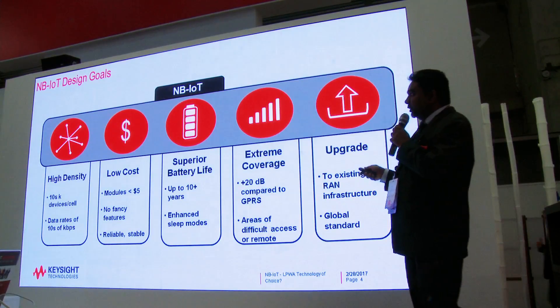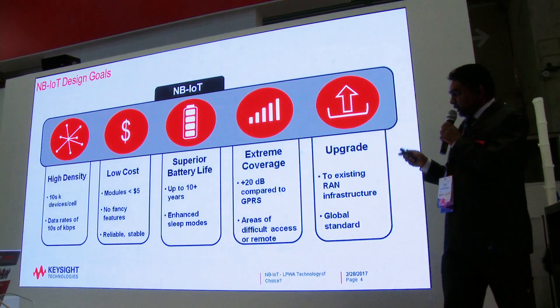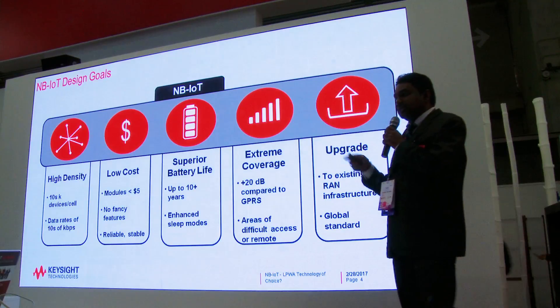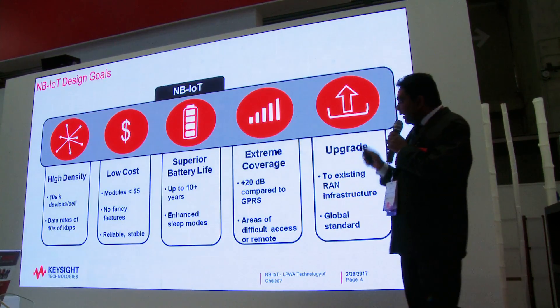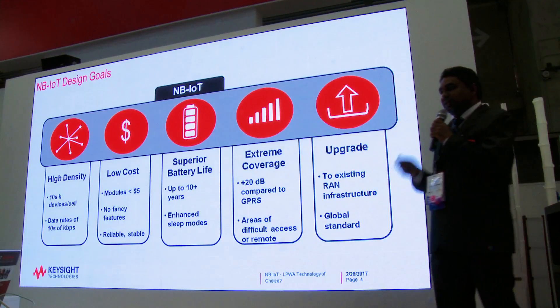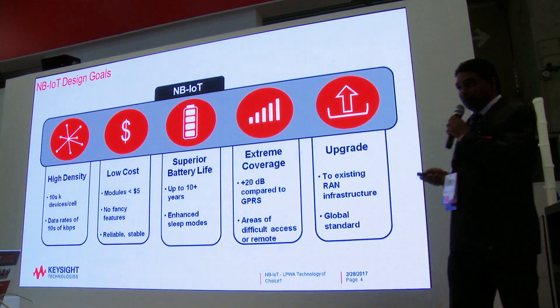Extreme coverage is another important design goal. A clear requirement for NB-IoT is a 164 dB link budget, which is 20 dB better compared to GPRS. Other LPWA technologies like CAT-M have a link budget in the range of 140 dB. This good link budget enables signal penetration into areas with poor coverage, like basements and tunnels. Finally, seamless upgrade of existing LTE and GSM networks to NB-IoT is another important goal.